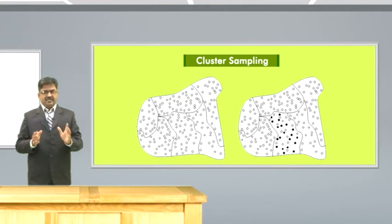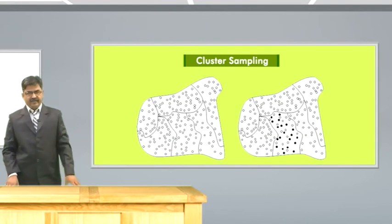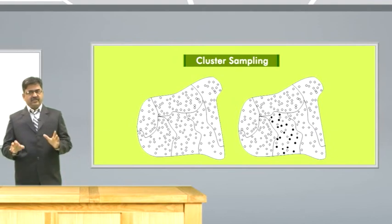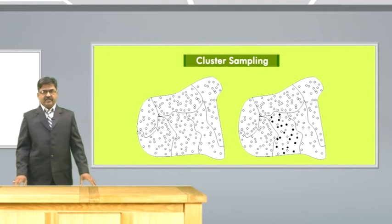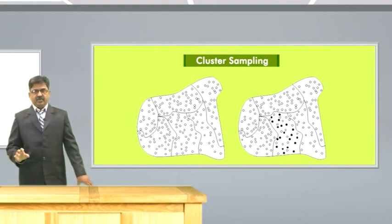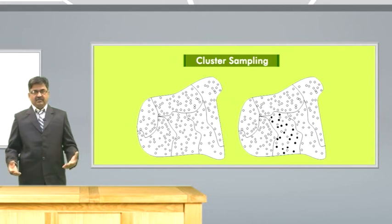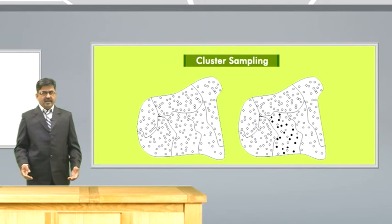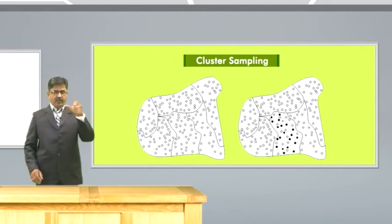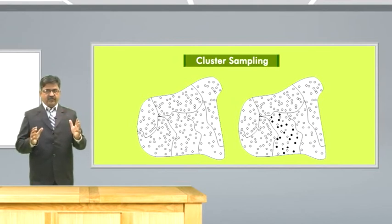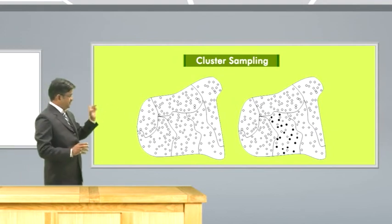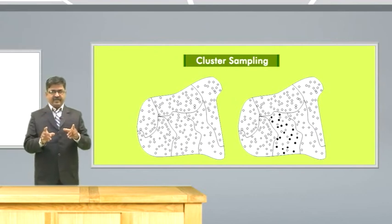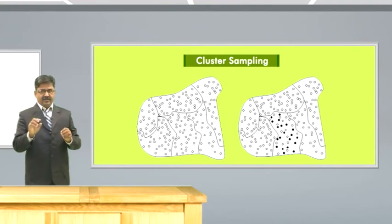Next comes cluster sampling. Cluster sampling is somewhat similar to stratified random sampling in that the population is divided into mutually exclusive clusters. The clusters are made in such a way that they are representative of the population. Simple random sampling technique is used to draw the sample from each cluster. One-stage cluster sampling or multi-stage cluster sampling can be used. In this figure, the whole population is divided into six clusters. Out of these six clusters, I have randomly selected one cluster, and from that particular cluster, again using simple random sampling, I am selecting my sample. This is called cluster sampling.